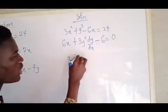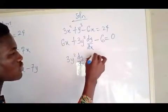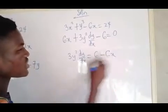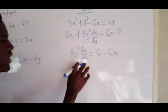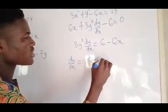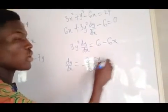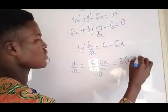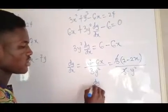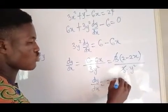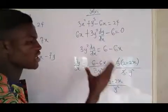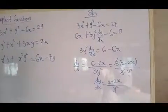Now take the dy/dx term to one side: 3y squared dy/dx equals 6 minus 6x. When the minus crosses, it becomes plus, and 6x crosses to the other side to become minus 6x. So dy/dx equals 6 minus 6x over 3y squared. Factoring out the common factor of 3 gives dy/dx equals 2 minus 2x over y squared. That is the answer for this equation.